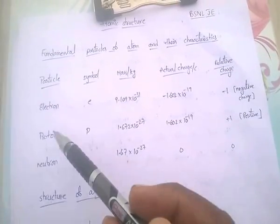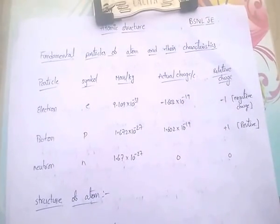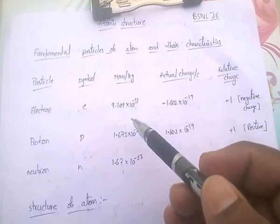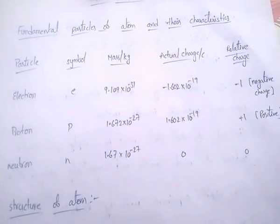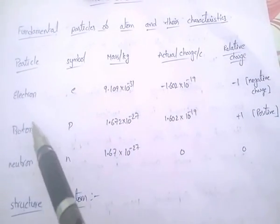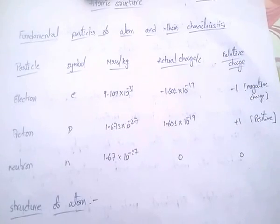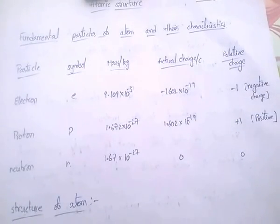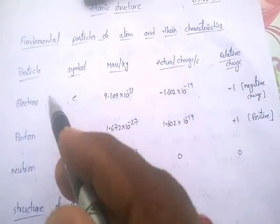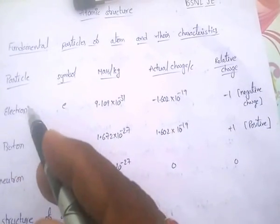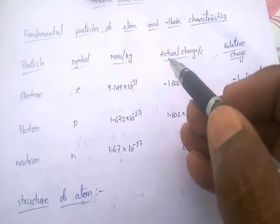Coming to the particle electron. The symbol of electron is E. The mass of electron is 9.109 × 10⁻³¹ kg. The charge of this electron is 1.602 × 10⁻¹⁹ C, and the relative charge of electron is minus — that is negative. That means electron is a negatively charged particle. That's why we keep minus for this charge.